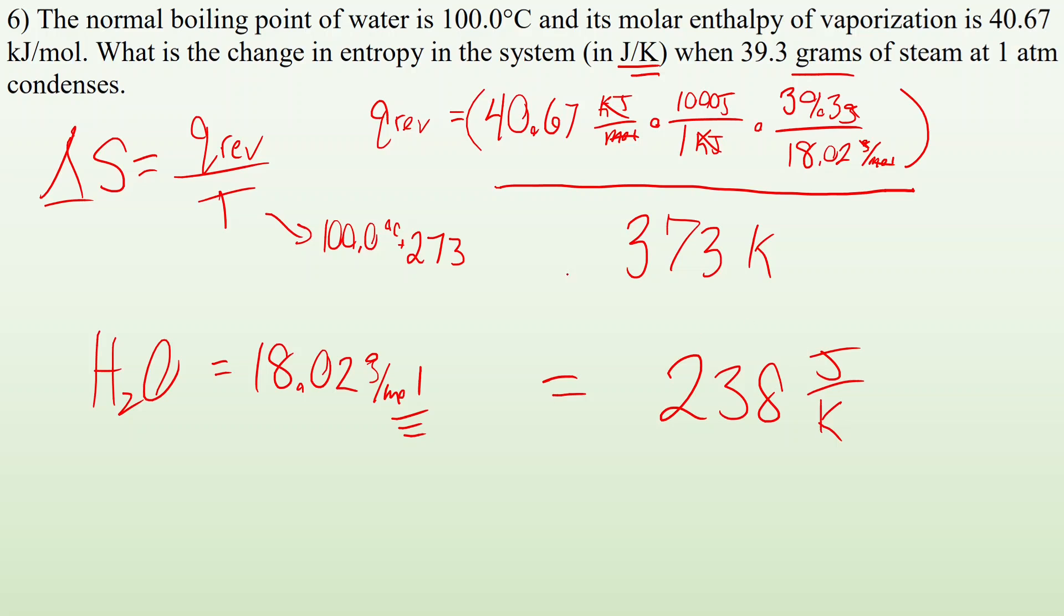Now I go back and I think about what is actually happening? Is this a positive change or is this a negative change? And it's saying it condenses. So I'm going from a gas to a liquid. So I know my entropy is going down. So this change is going to be a negative 238 joules per Kelvin.